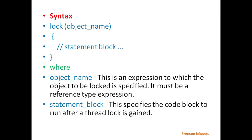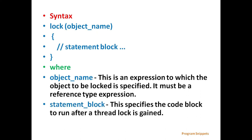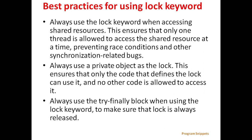The general syntax for defining a lock is: the lock keyword followed by an object name and then a statement block. The object name is an expression to which the object to be locked is specified — it must be a reference type expression. The statement block specifies the code block to run after a thread lock is gained.